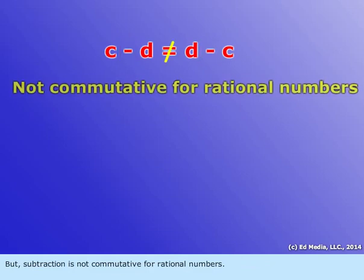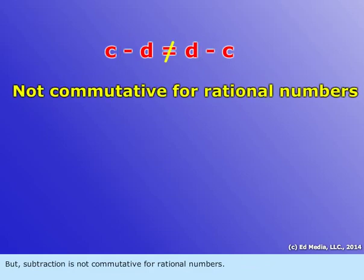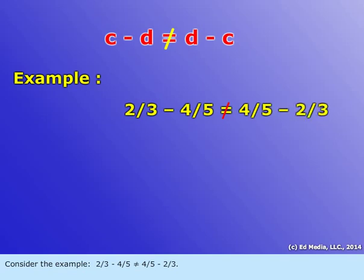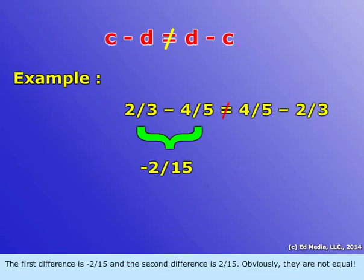But subtraction is not commutative for rational numbers. Consider this example. Two-thirds minus four-fifths is not equal to four-fifths minus two-thirds. The first difference is negative two-fifteenths, and the second difference is two-fifteenths. Obviously, they're not equal.